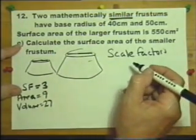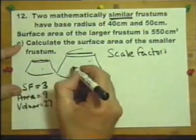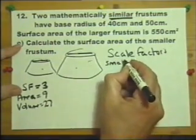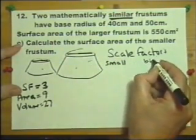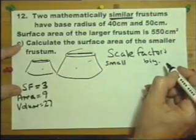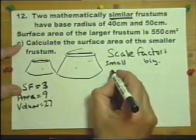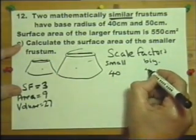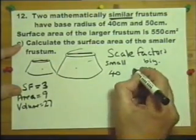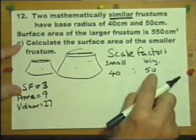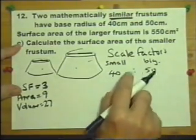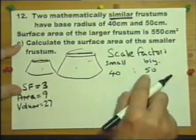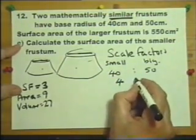So let's look at this question. Let's call that the small one and that the big one — seems quite reasonable. The base radius of the small one is 40 and the base radius of the large one is 50. So we can say the ratio of their sides, their radii, their diameters, their heights, and their circumferences are all the same ratio of four to five.